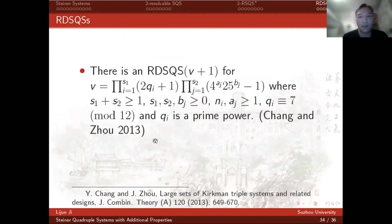Up to now, there is RDSQS of these orders: v plus 1, where v is of this form. We can see that there are only a few results on RDSQS, 2-resolvable SQS, and 2-resolvable SQS with star. So there is much to be studied.